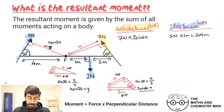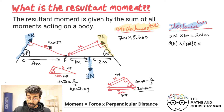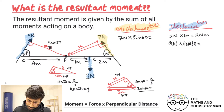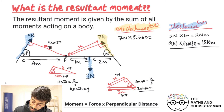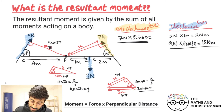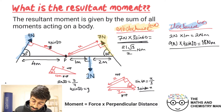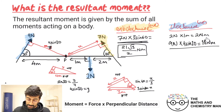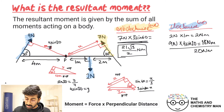Calculating: nine Newtons times 4 sine 30 gives 18 Newton meters for the clockwise moment from the nine Newton force. The anti-clockwise moment from seven Newtons times 3 sine 60 comes out as 21 root 3 over 2 Newton meters — a bit ugly, but we keep it exact. The two clockwise moments sum to 20 Newton meters, which we make negative.